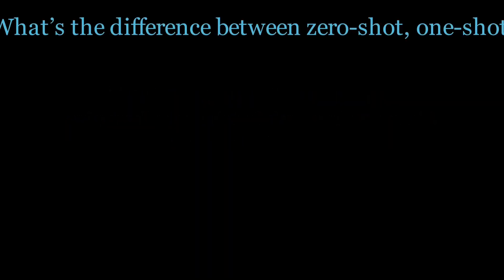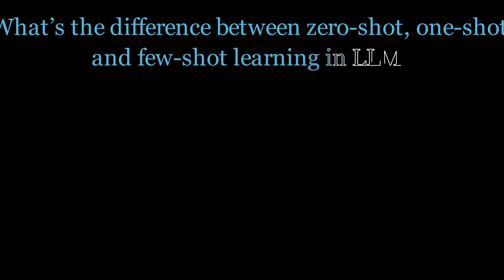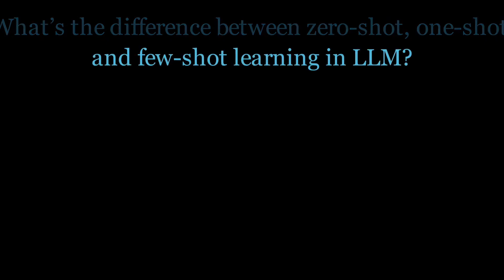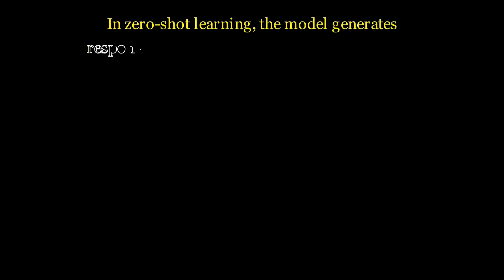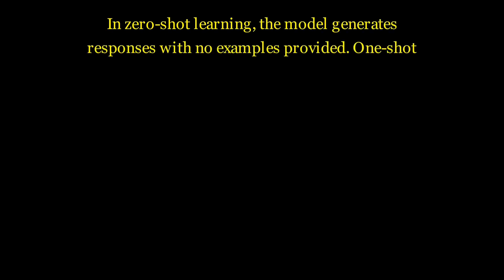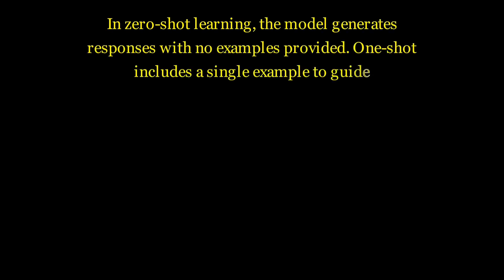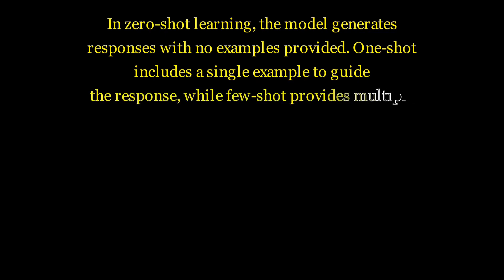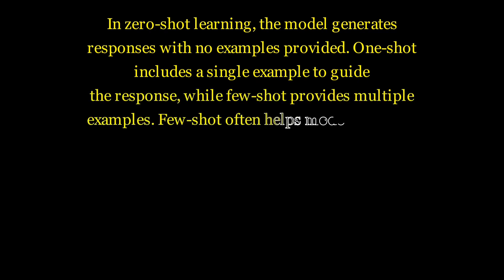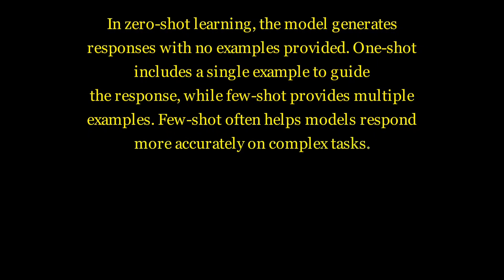What's the difference between zero-shot, one-shot, and few-shot learning in LLMs? In zero-shot learning, the model generates responses with no examples provided. One-shot includes a single example to guide the response, while few-shot provides multiple examples. Few-shot often helps models respond more accurately on complex tasks.